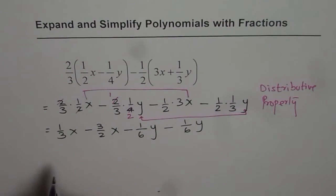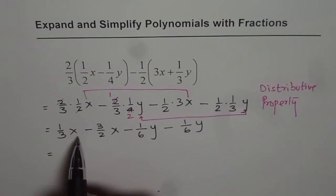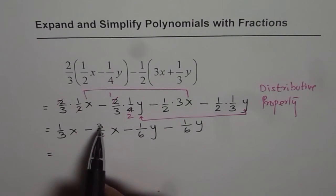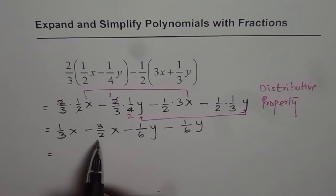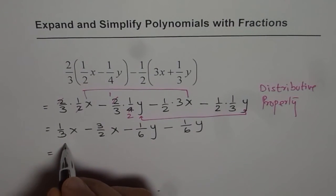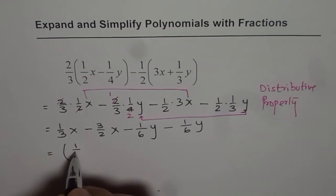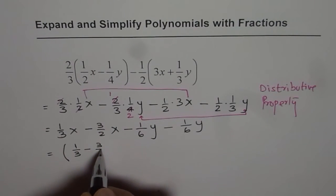Let's combine the like terms. Now in the first case for x we have one-third and 3 over 2. To add one-third and 3 over 2 is kind of like this. Let me show you how, 1 over 3 minus 3 over 2.